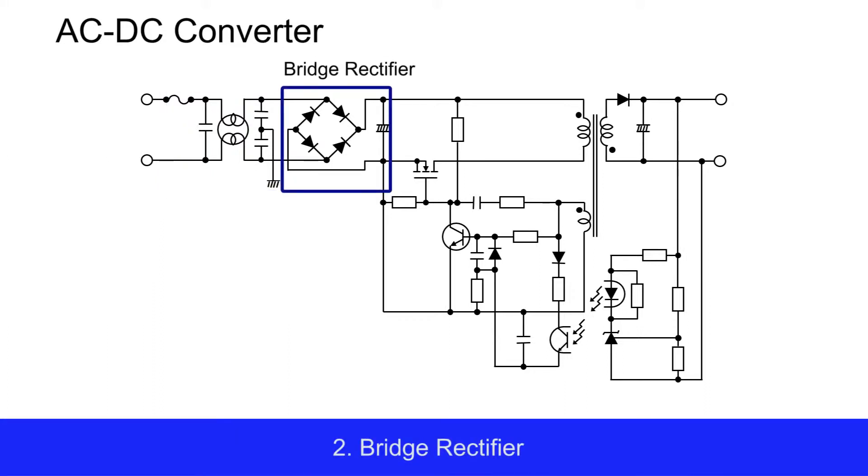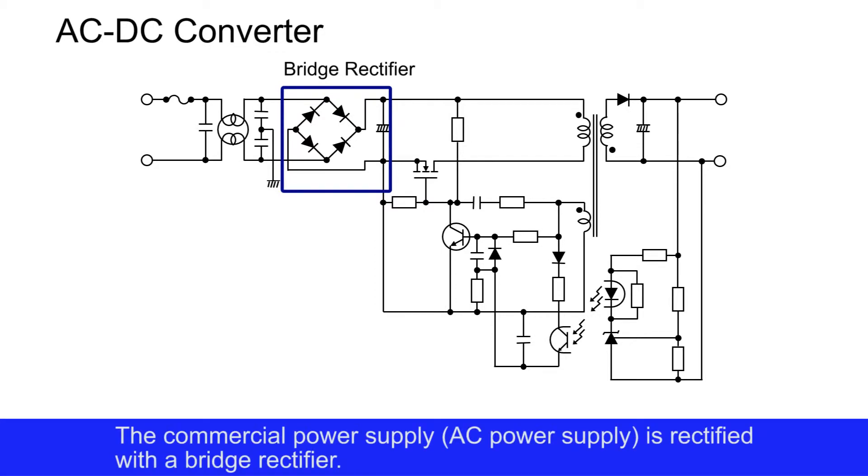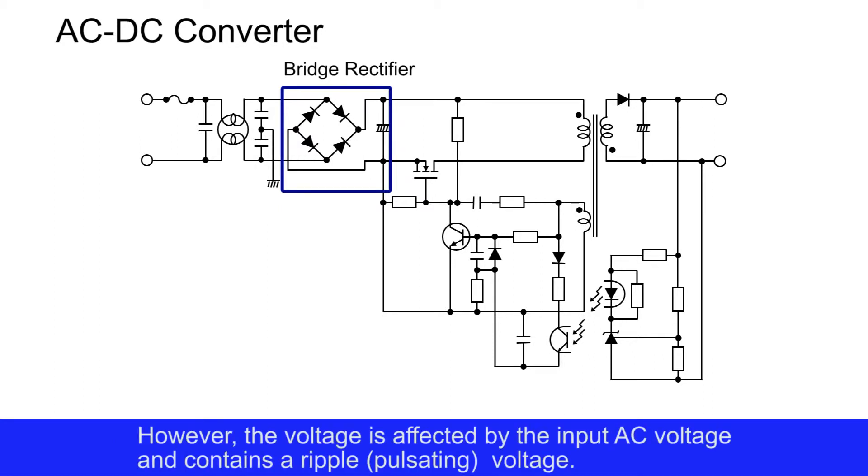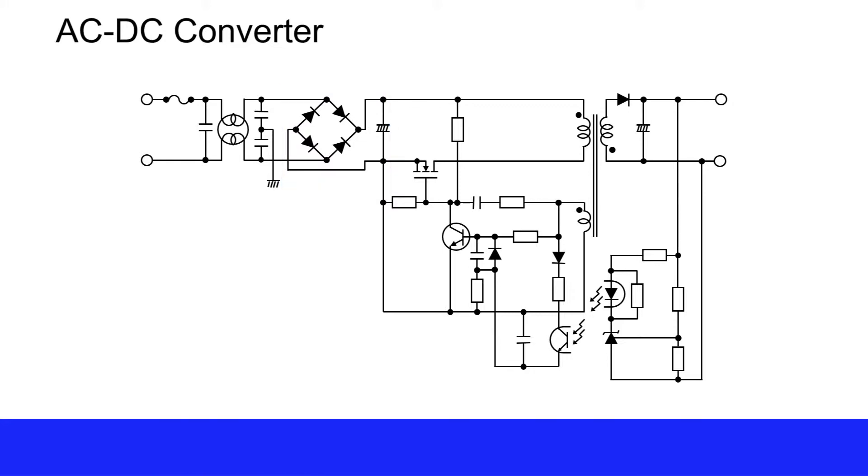Second, the bridge rectifier. The commercial AC power supply is rectified with the bridge rectifier. The voltage output from this block is converted into DC voltage. However, the voltage is affected by the input AC voltage and contains a ripple, or pulsating, voltage.